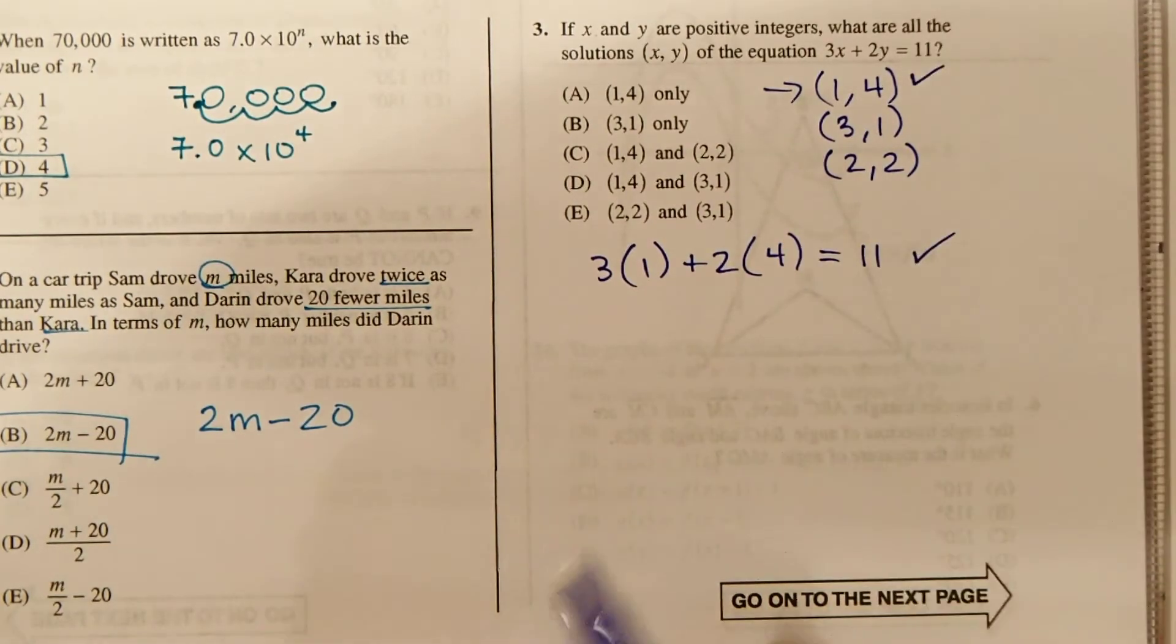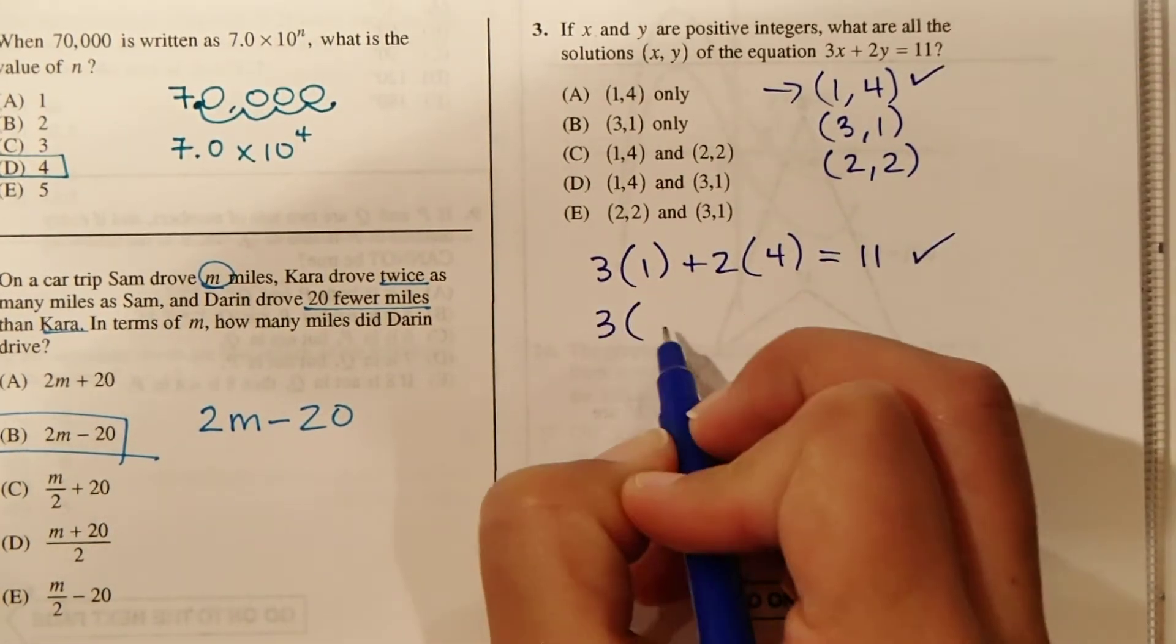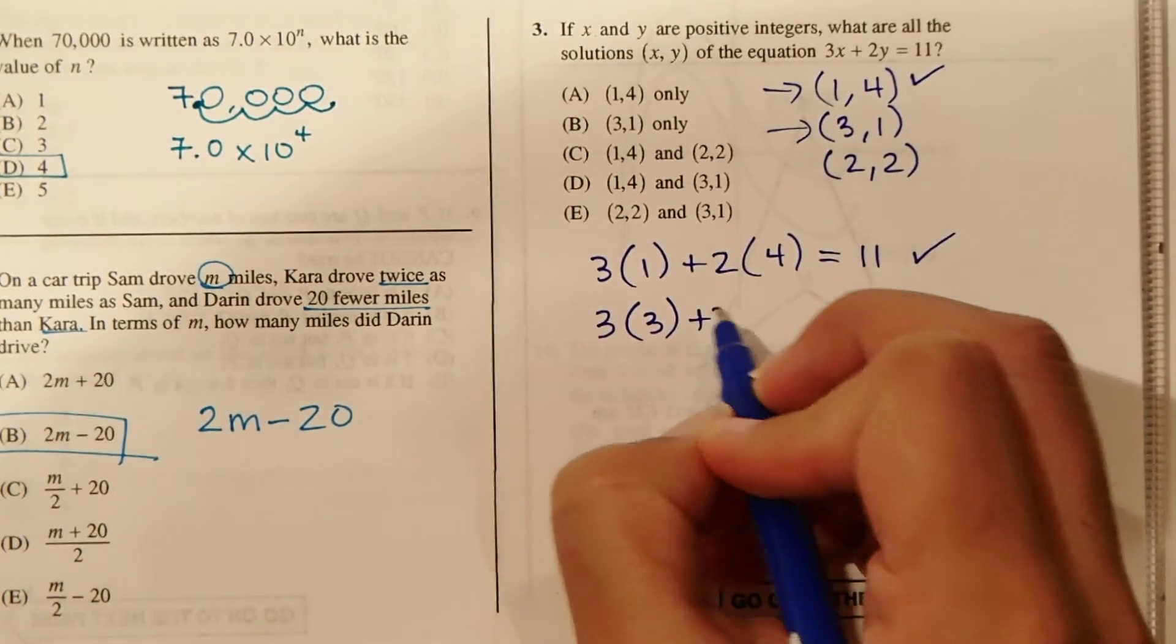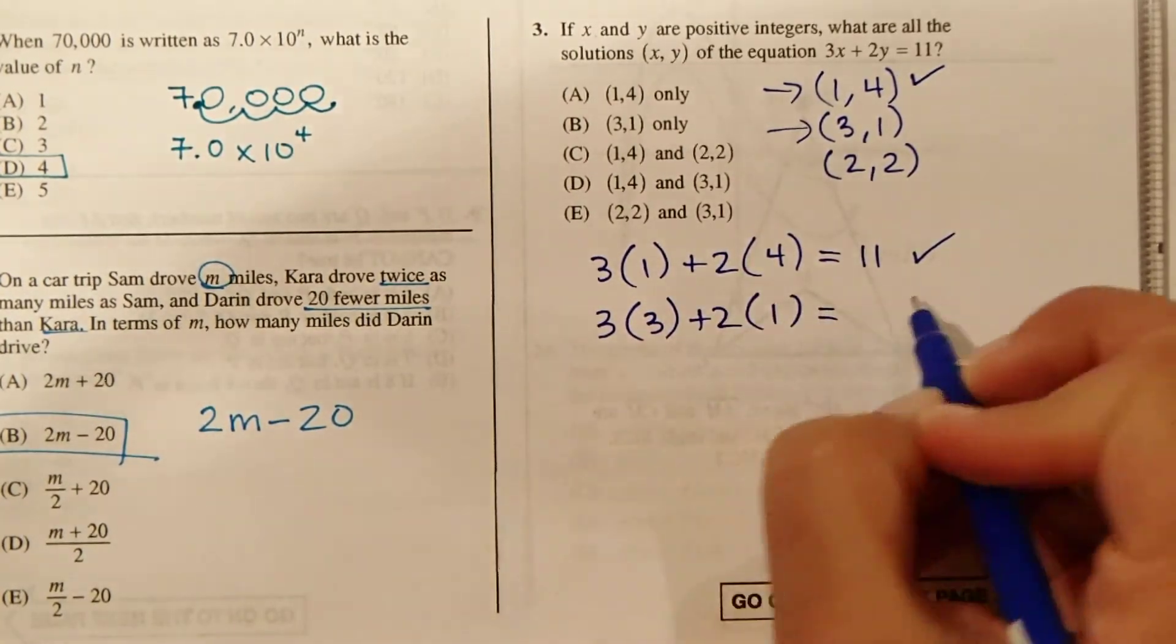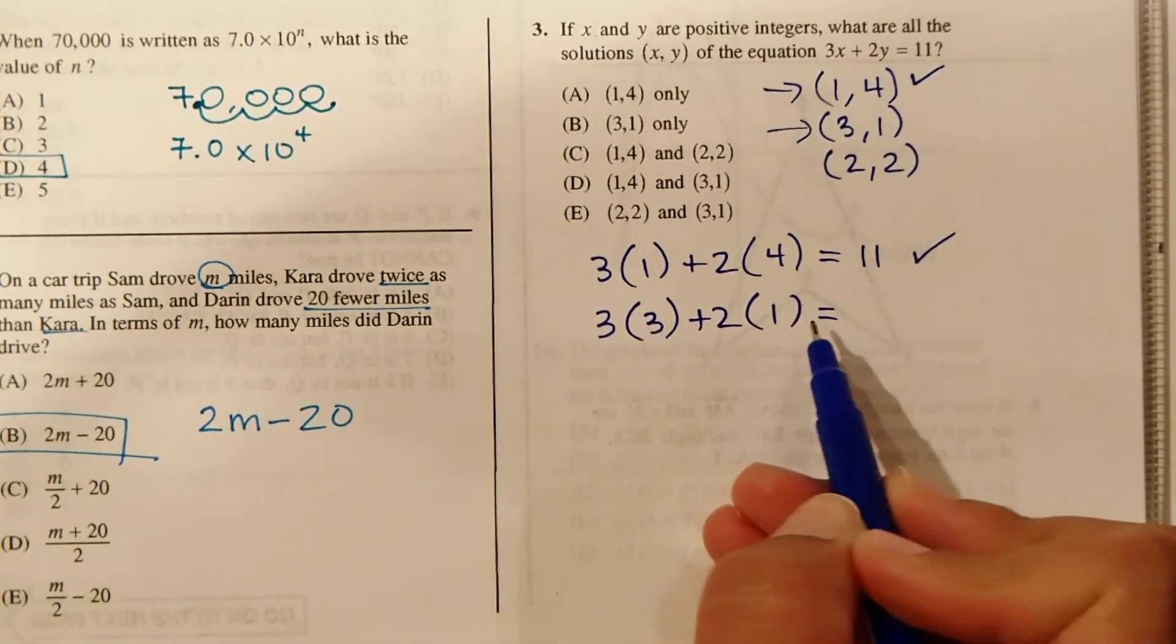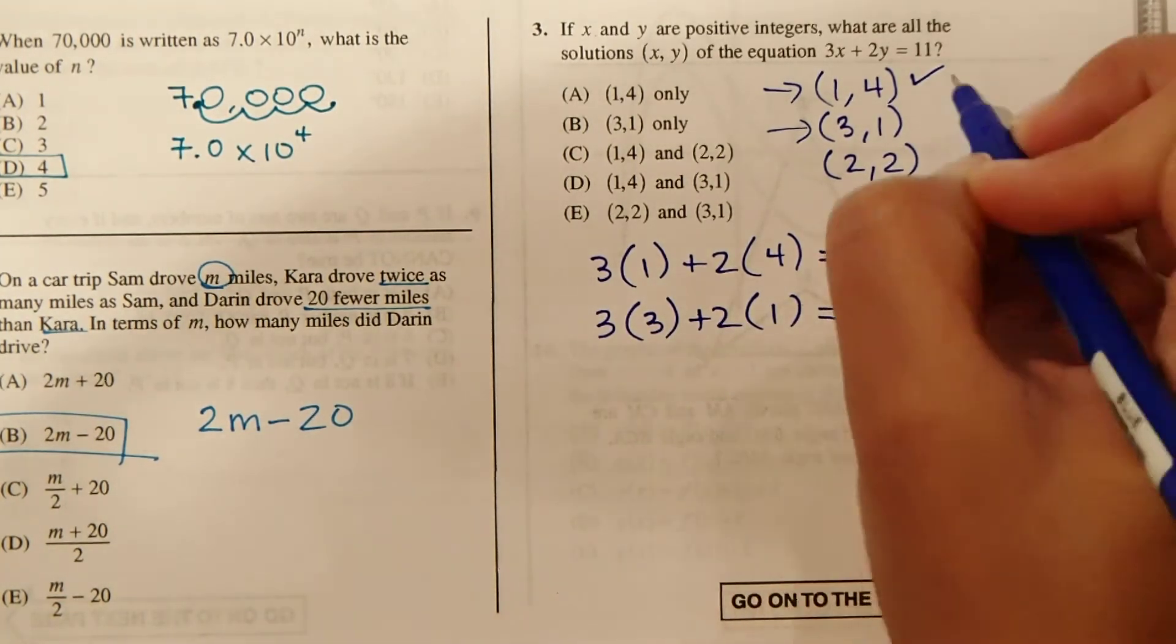Let's try the next one. 3 times x, which is 3 in this case, plus 2 times 1, which is y. So we've got 9 plus 2. So that's also 11. So that's going to work as well.